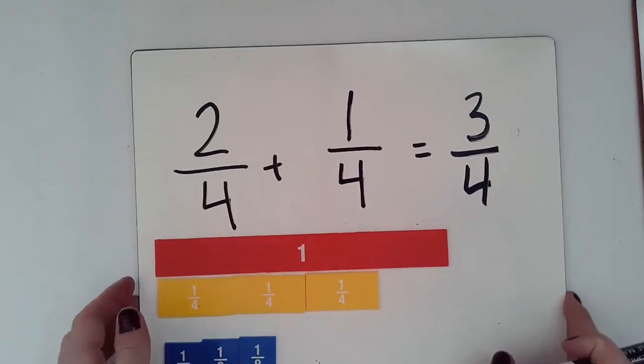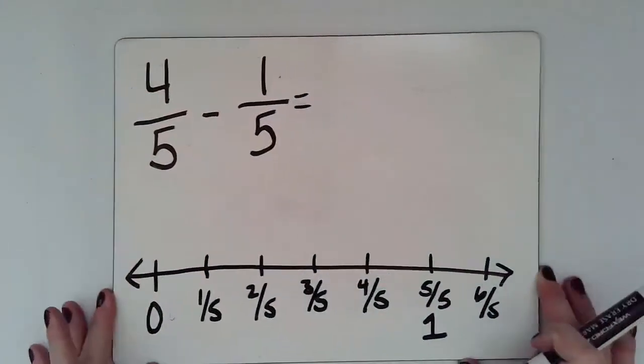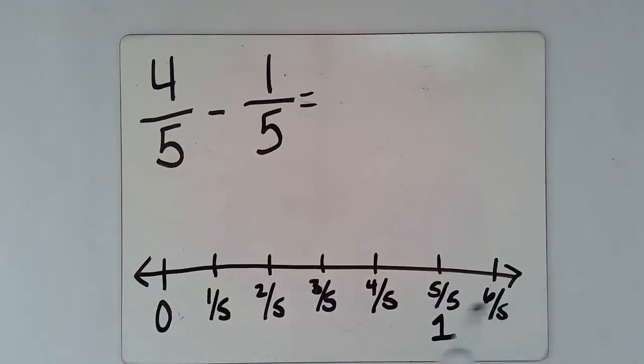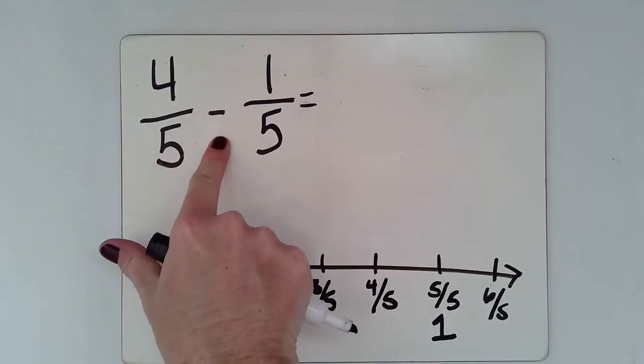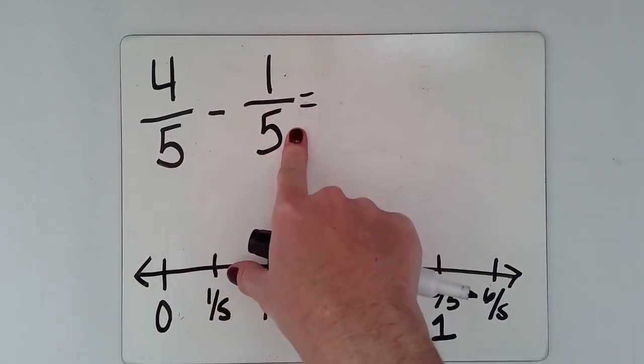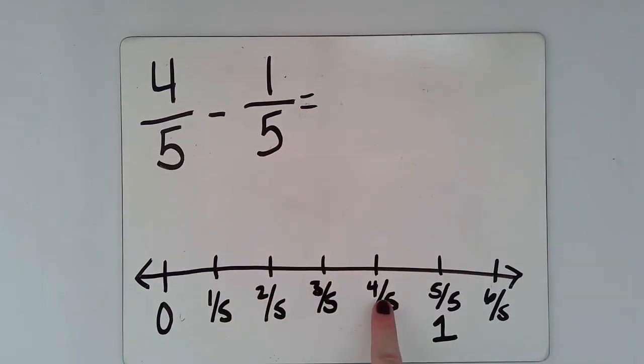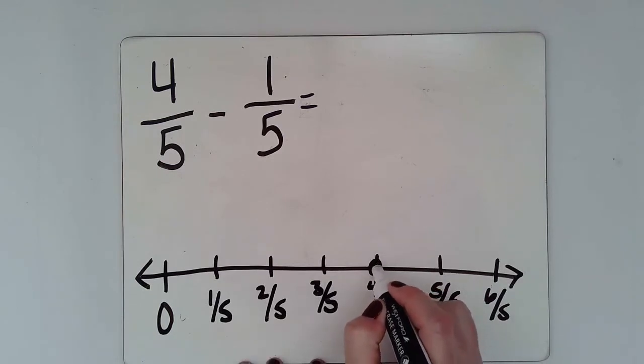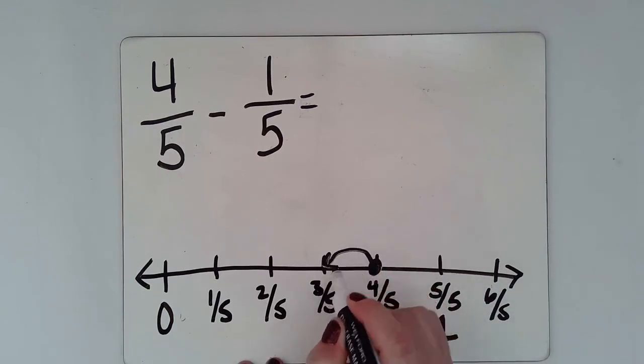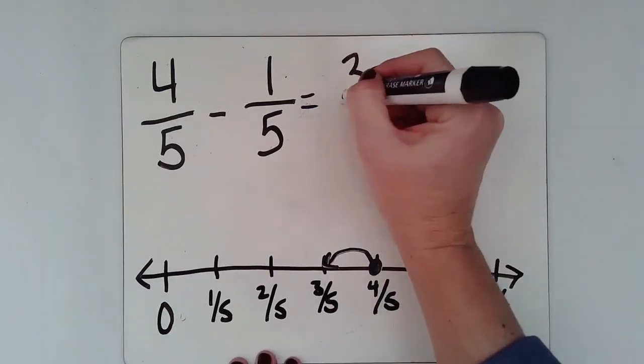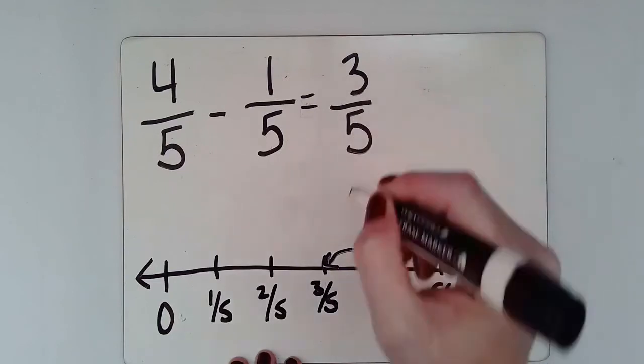All right, so let's take a look at a subtraction problem and how we can subtract this using a number line. So you can see I have four fifths and I'm going to take away or subtract one fifth from that. So you can use a number line just like you've used with whole numbers before. And you can find four fifths, which I already have here on my number line. And I can move back one, showing that I'm taking away one. And I get three fifths.